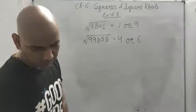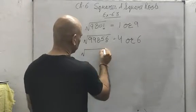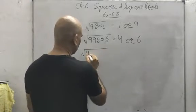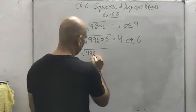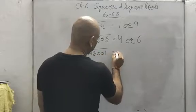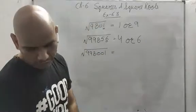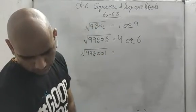Hope it is clear. Next: 998001 — 1 comes in the square of 1 (1² = 1) and in the square of 9 (9² = 81). So the unit place will be either 1 or 9.